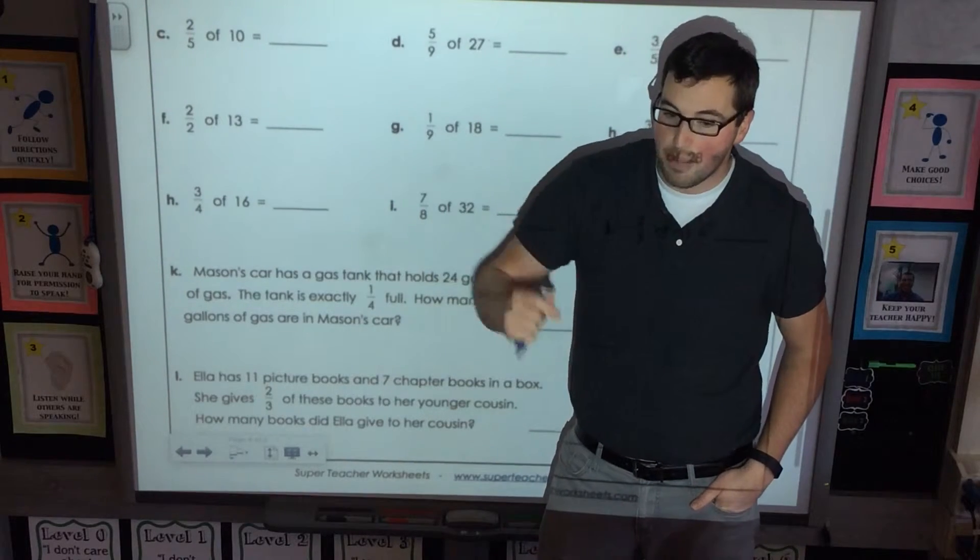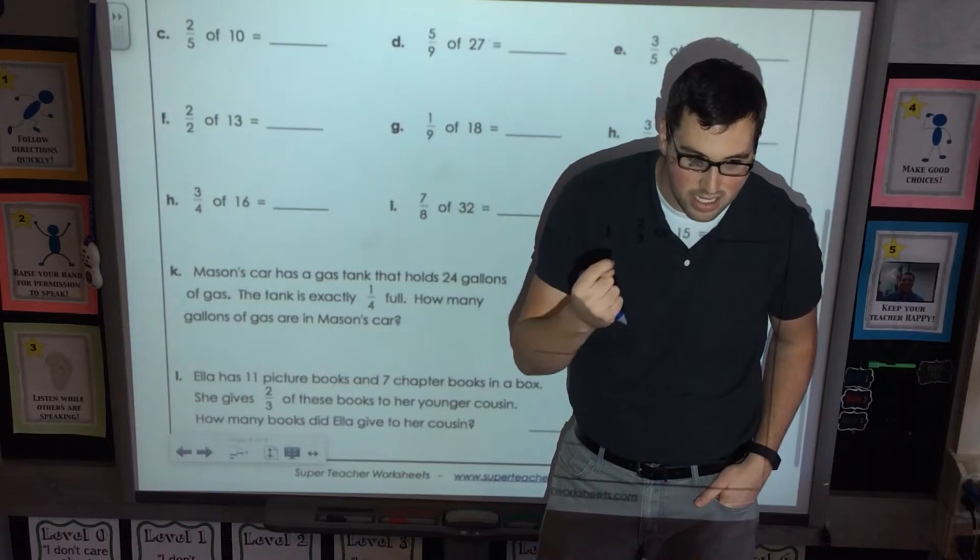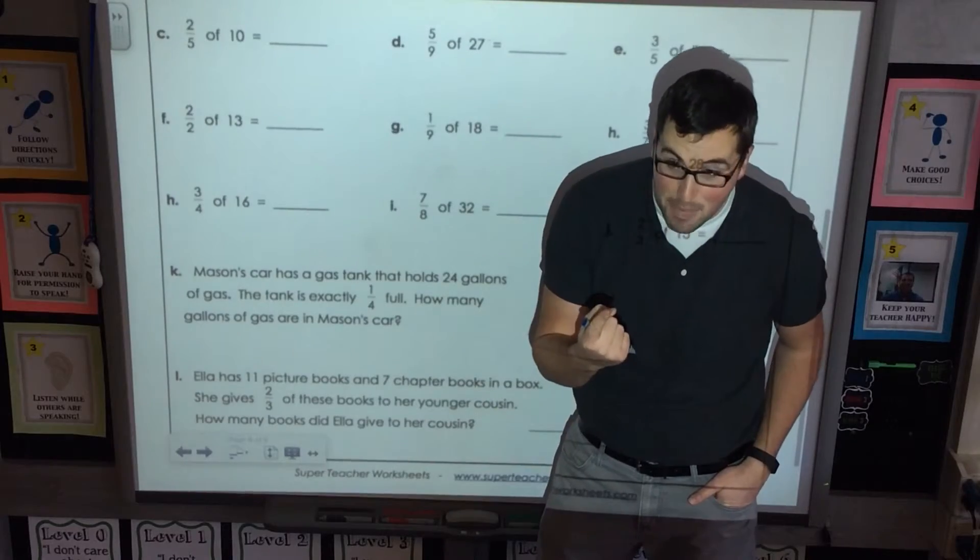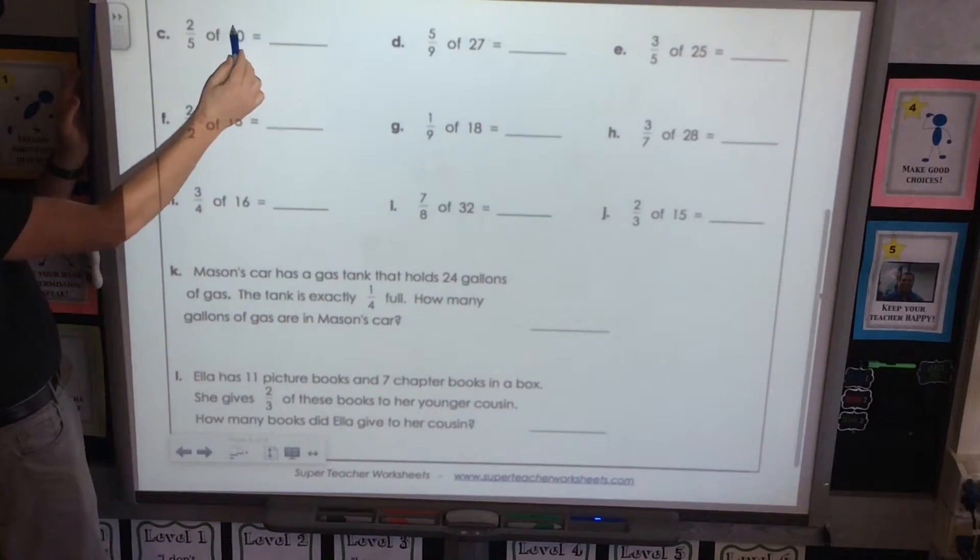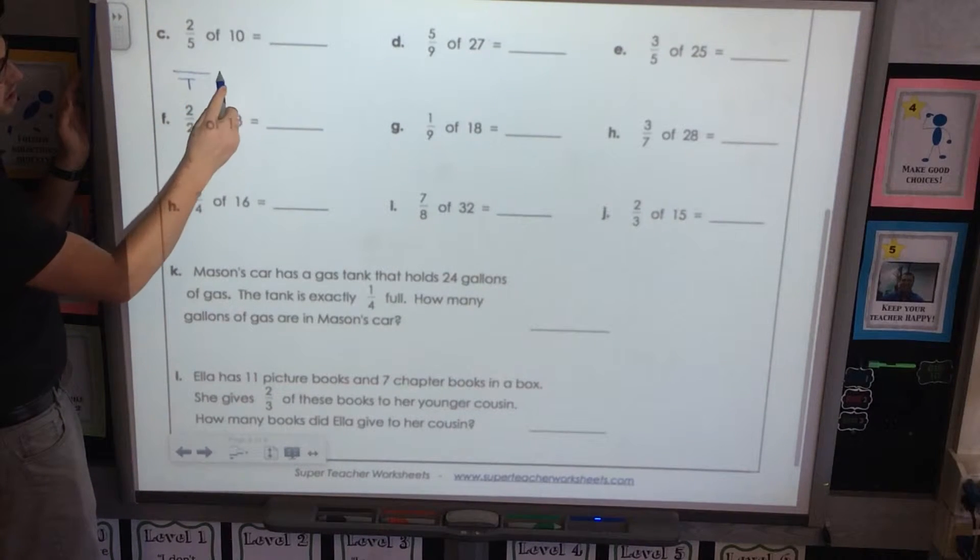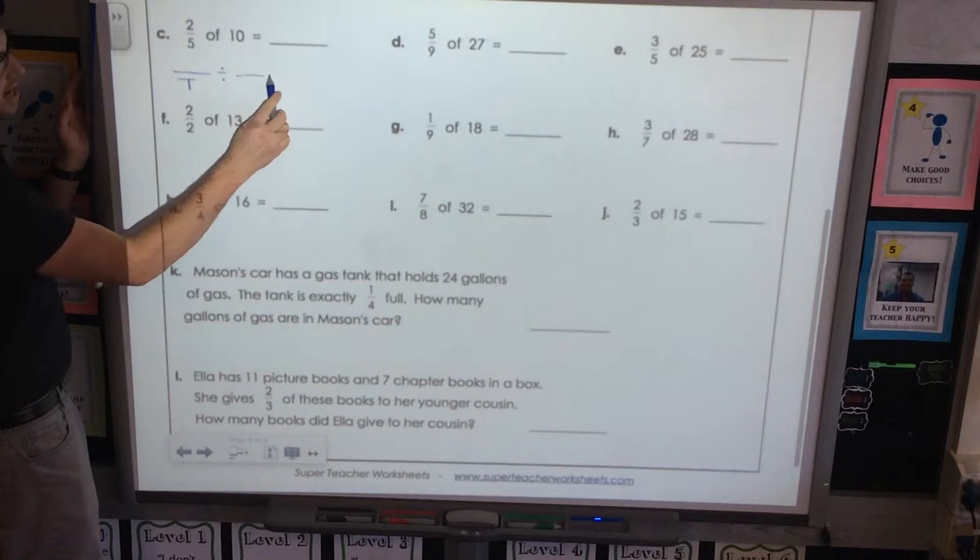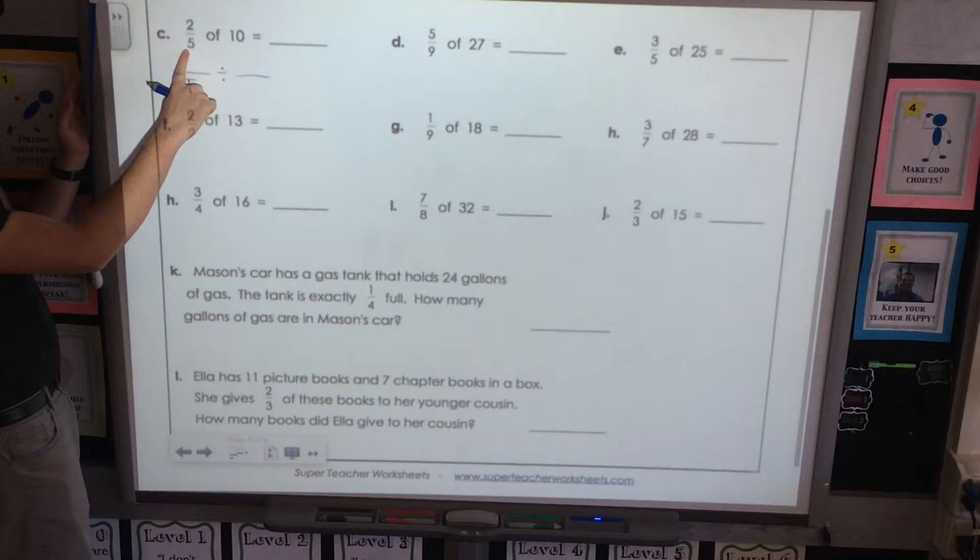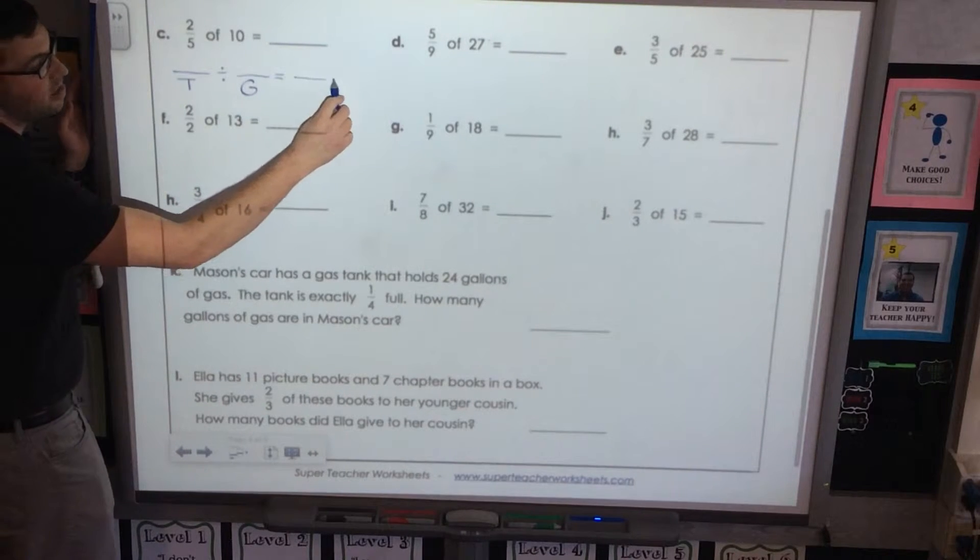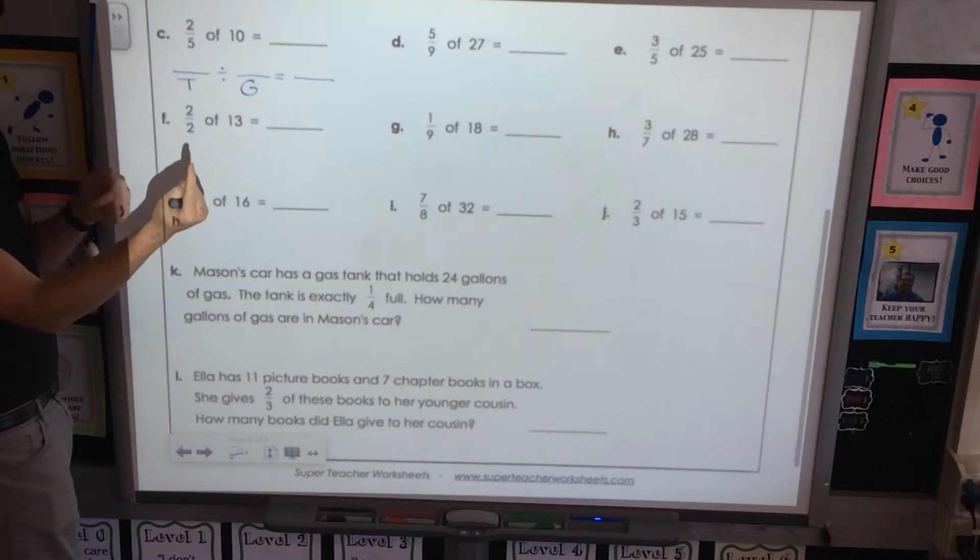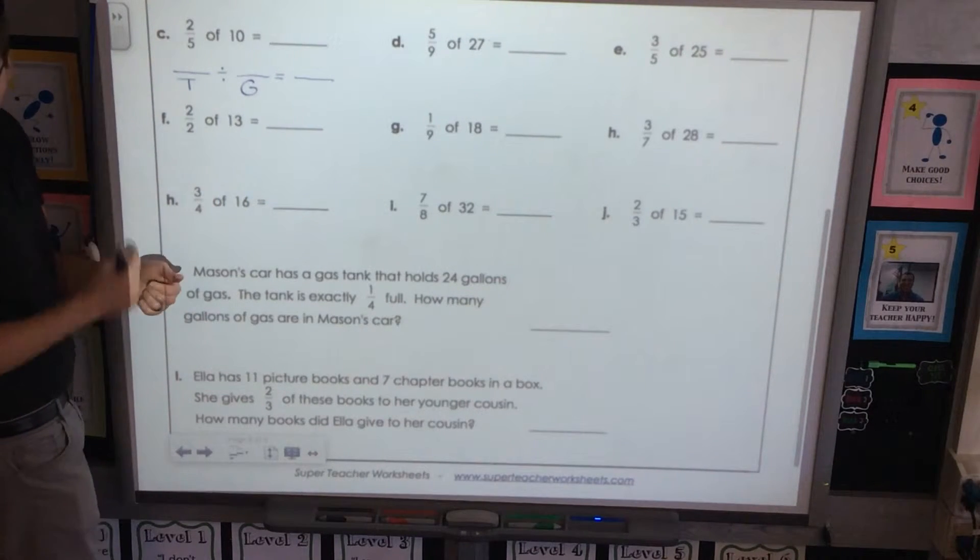So we're going to step one, set up our template. What's step one? Template. Template. Nice. Let's do it. Okay. So we're taking our total. What are we taking? A total. Dividing up into how many? Groups. Groups. And it'll tell us how many marbles are in each group. Well done.